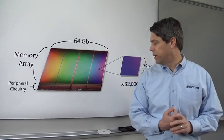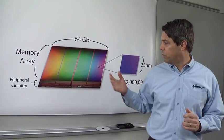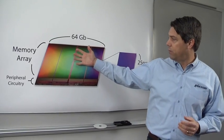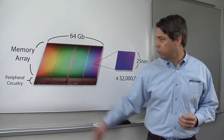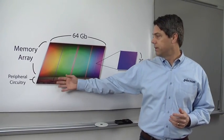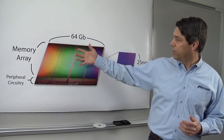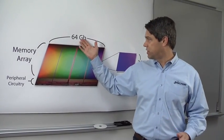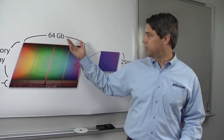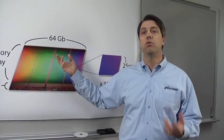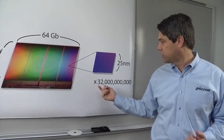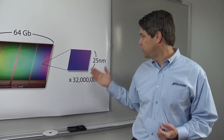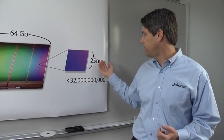And to put that into a little bit of perspective, we have an enlarged photograph of this die showing the memory array where the data is stored and the peripheral circuitry that's the communication port to the outside world. But the memory array itself, in the case of this 8 gigabyte or 64 gigabit die, since it's using MLC or 2-bit per cell technology, actually has over 32 billion storage cells. Each one of these storage cells is 25 nanometers wide.